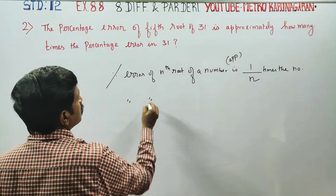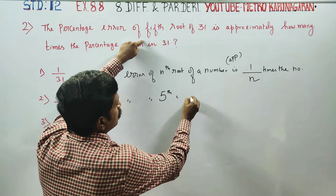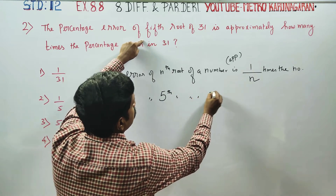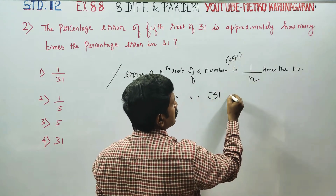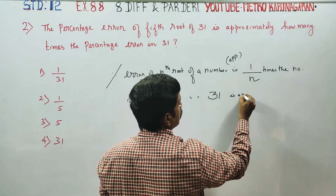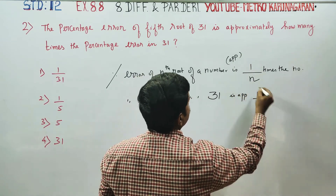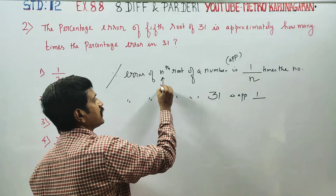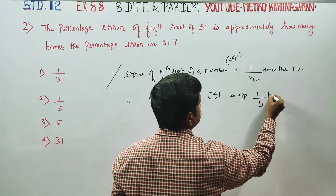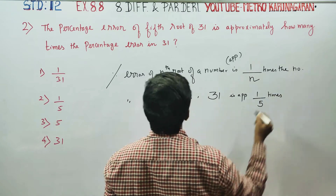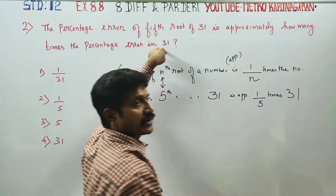So, the percentage error of the 5th root of 31 is approximately 1 by n, where n is 5. That gives us 1 by 5 times 31.